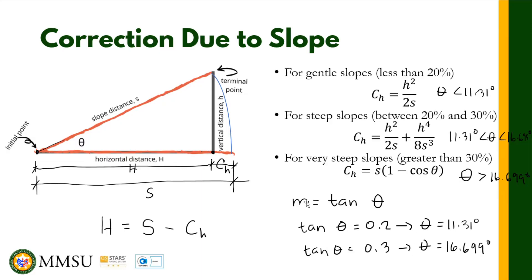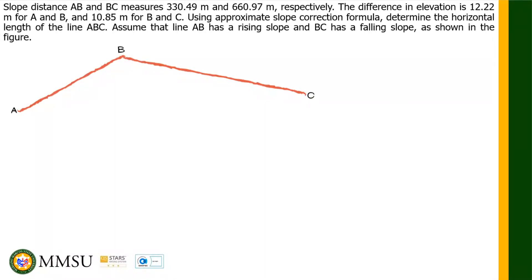We will now illustrate these formulas with an example. We have slope distances AB and BC measuring 330.49 meters and 660.97 meters respectively. The difference in elevation is 12.22 meters for A and B, and 10.85 meters for B and C. Using the approximate slope correction formula, determine the horizontal length of line ABC. Line AB has a rising slope and BC has a falling slope. So S-AB equals 330.49 meters.